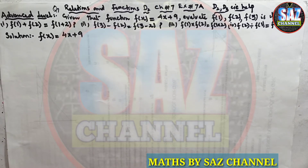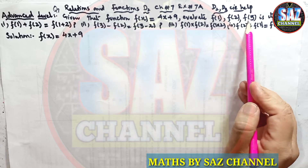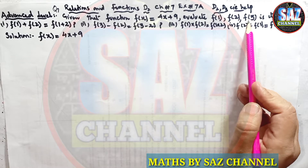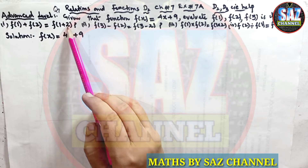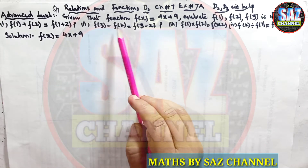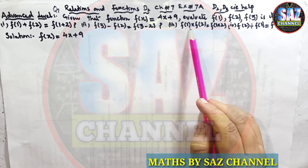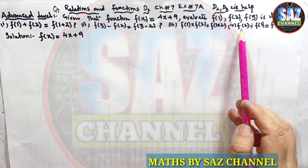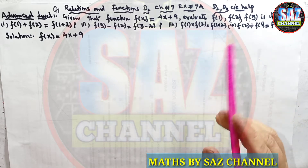The question says: given that the function f(x) = 4x + 9, we have to evaluate f(1), f(2), and f(3). Then we have to decide for different parts: whether f(1) + f(2) equals f(1+2); whether f(3) − f(2) equals f(3−2); whether f(1) × f(2) equals f(1×2); and finally whether f(2) ÷ f(1) equals f(2÷1).